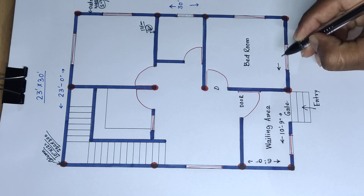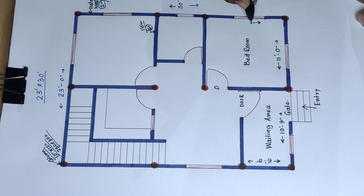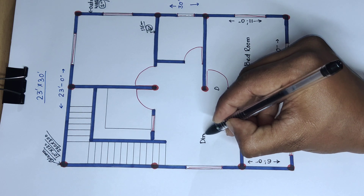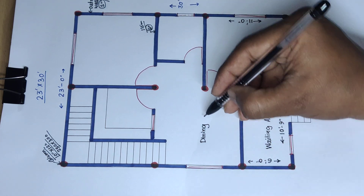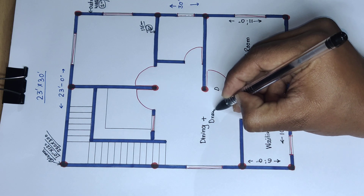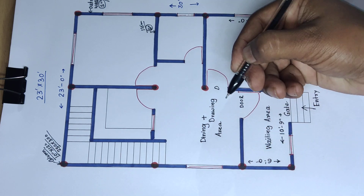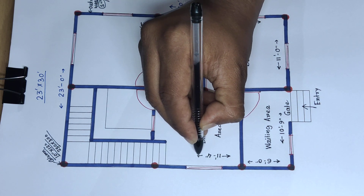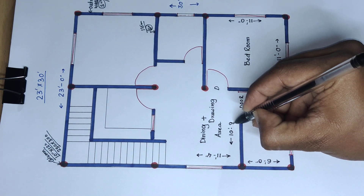This side distance is 11 feet 0 inch and this side 11 feet 0 inch. And this is the dining plus drawing area — this side distance is 11 feet 4 inch and this side distance is 10 feet 9 inch.